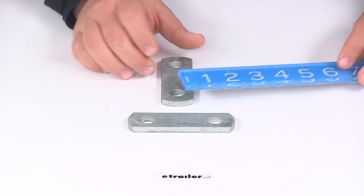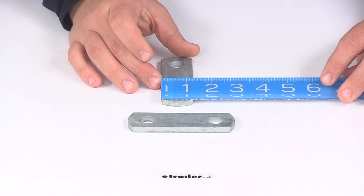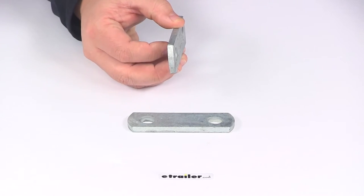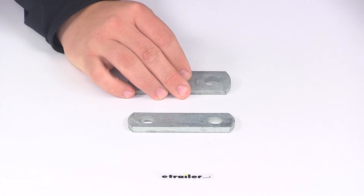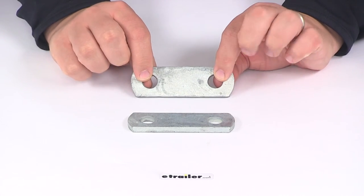The overall width measures one and a quarter inches. Each strap is a quarter-inch thick steel, and the bolt hole diameters measure nine-sixteenths of an inch.